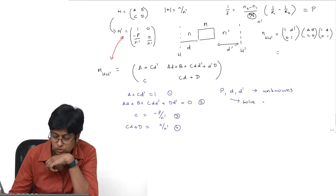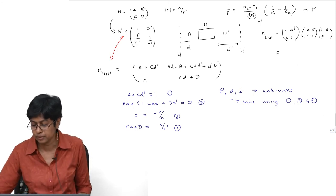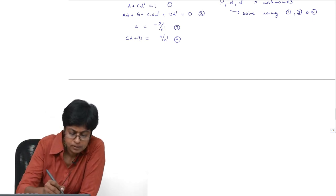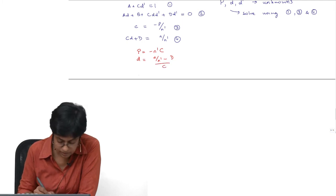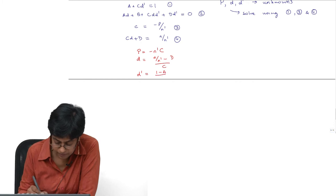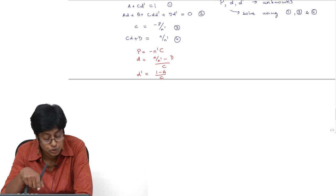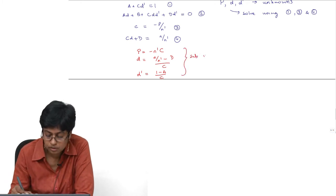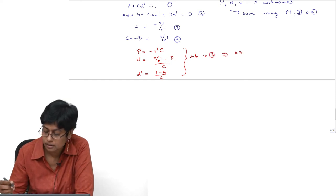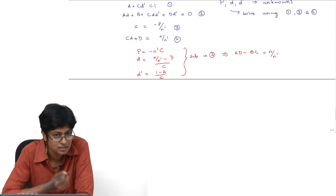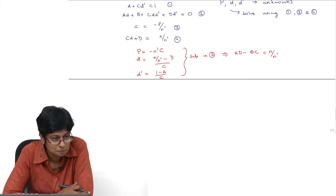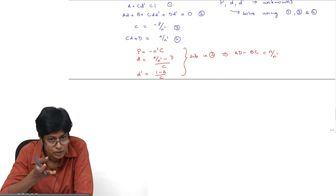Solving equations 1, 3, and 4, we get: P = −N'·c; d = N/N' minus capital-D divided by c; and d' = (1 − a)/c. If you substitute these three solutions into equation 2, you get a·d' − b·c, which is nothing but the determinant of the matrix — equal to N/N' — confirming the result is consistent.